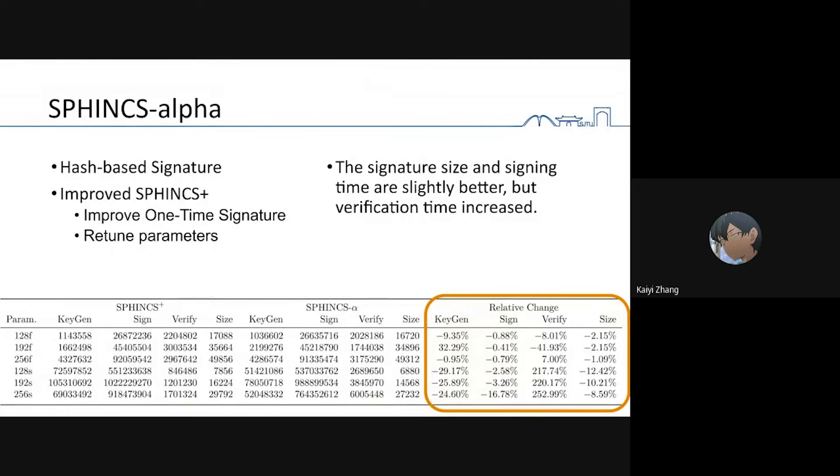SPHINCS-alpha is a hash-based signature, an improved version of SPHINCS+. We improve the one-time signature and return the parameter. The signature sign and sign time are slightly better than SPHINCS+, but verification time increases for some parameter sets.